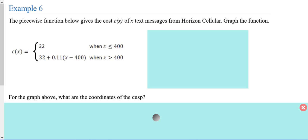So this one is made up of two functions. The first function, 32, tells us that it's $32 when x is less than or equal to 400. So I interpret that to mean that if we send 400 or fewer text messages, the cost will be $32.